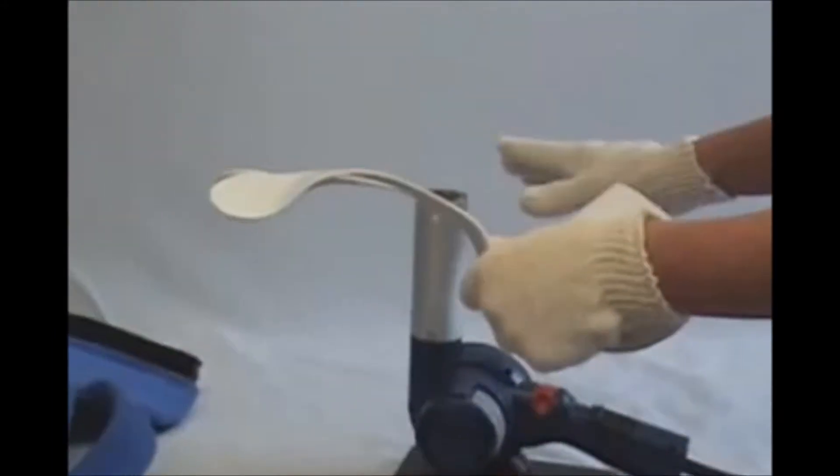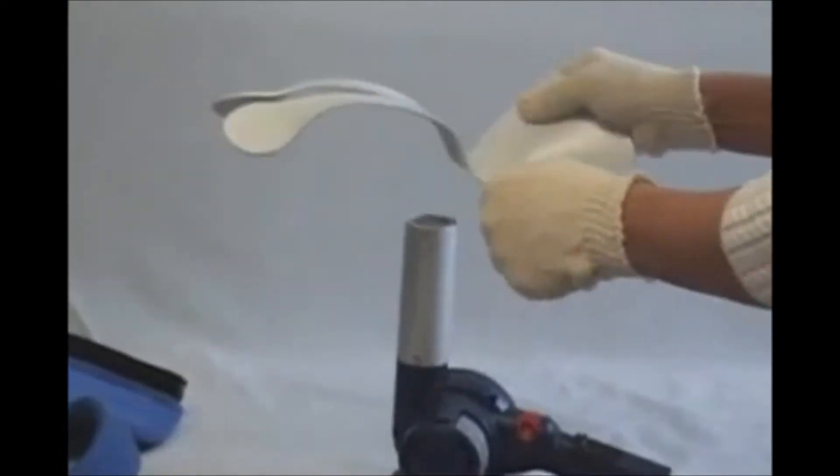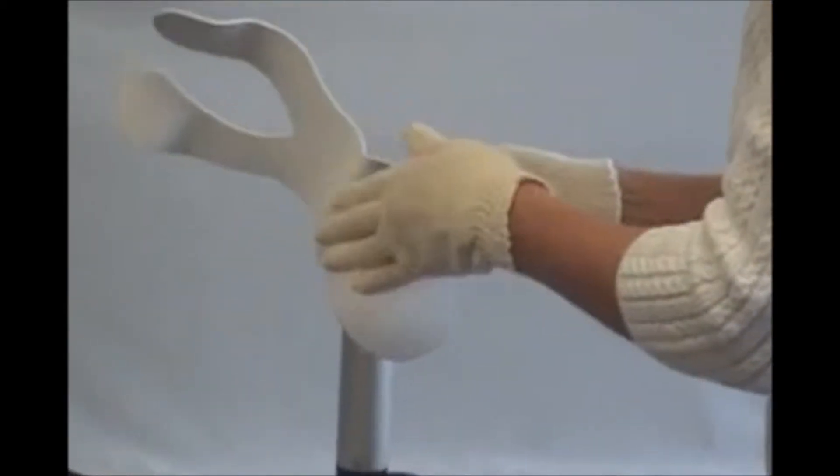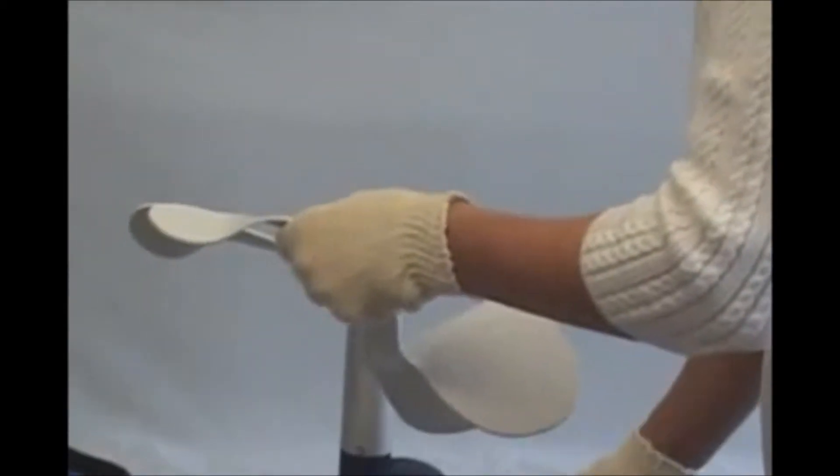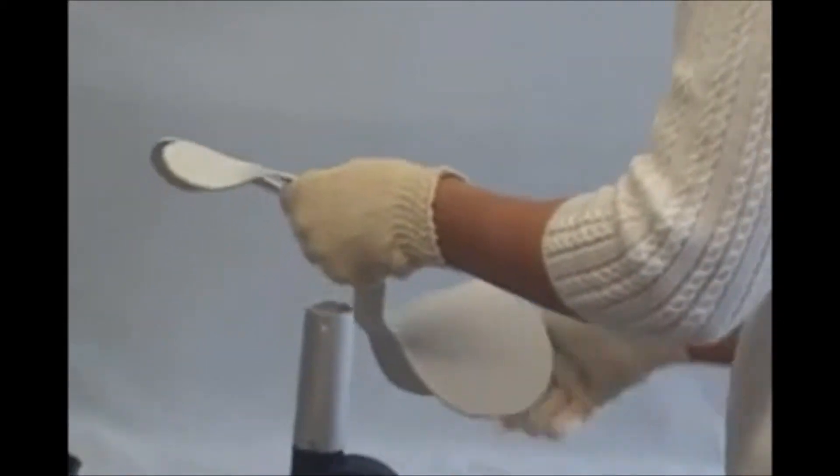You're going to turn the heat gun on and move the plastic. You don't hold it still or it'll scorch it. You want to heat an area just until it's barely pliable, remold it and let it cool. So I'm going to turn the heat gun on.